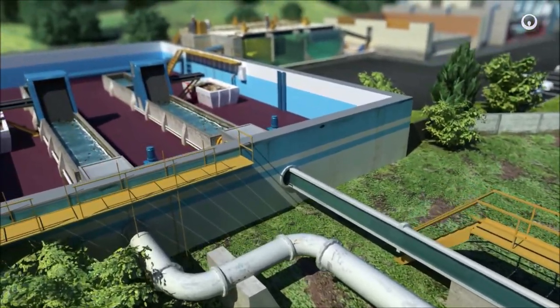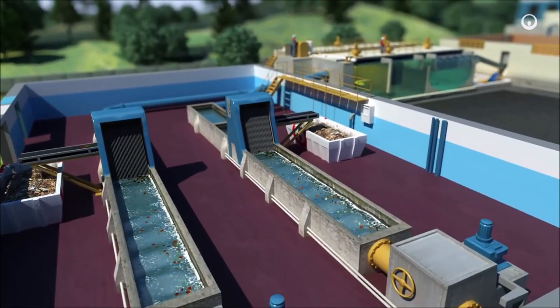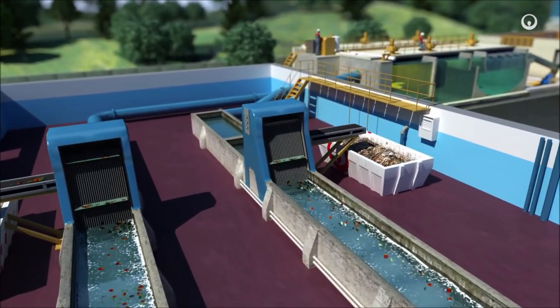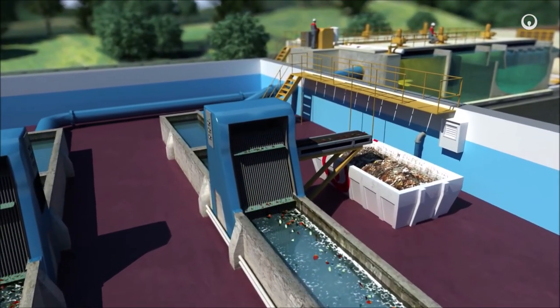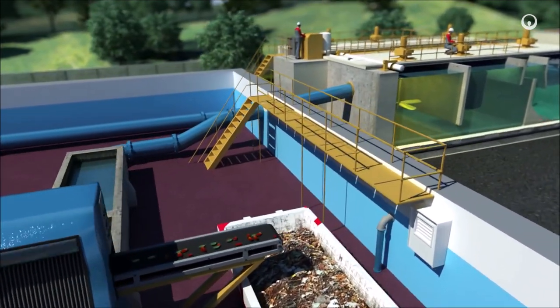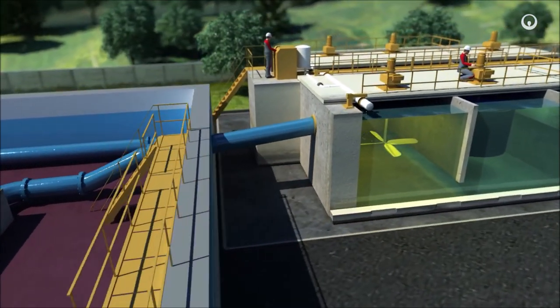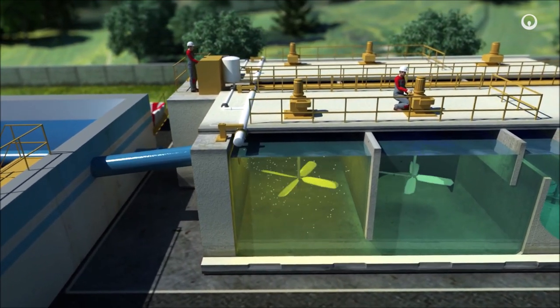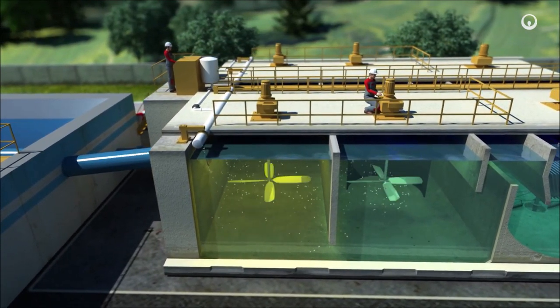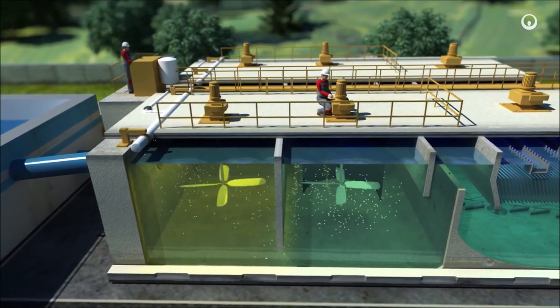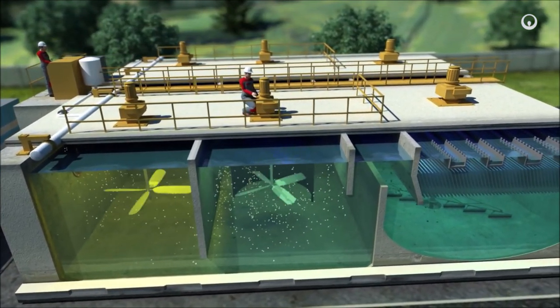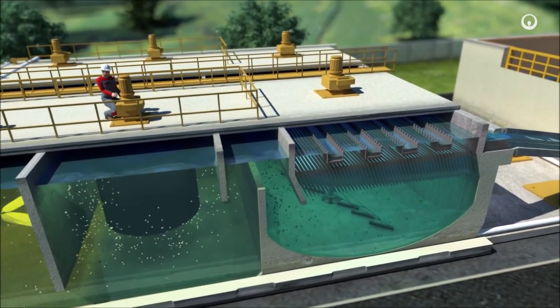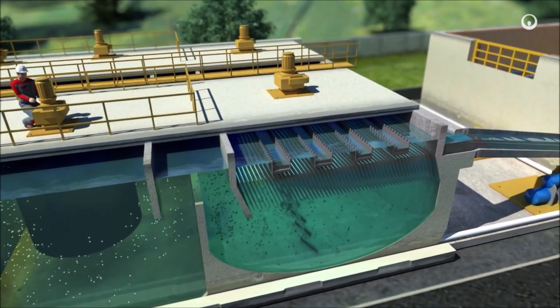First, we remove the suspended matter in the water. Here, screens block the solid waste and rakes then lift it out. Then we add a coagulant to the water. The dust, soil particles and other residual material gradually combine into clots, which are called flocs. Gravity drags these flocs to the floor of a large settling pond and we remove them.